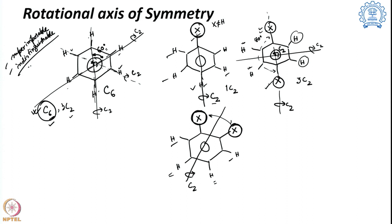The key take-home message for rotational axes of symmetry: find an axis, determine the rotation angle that gives a superimposable structure, divide 360 by that angle to get integer n, and that defines your Cn. BF3 has C3, benzene has C6, and substituted benzenes are mostly limited to C2 axes.